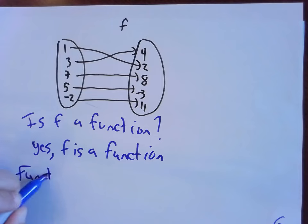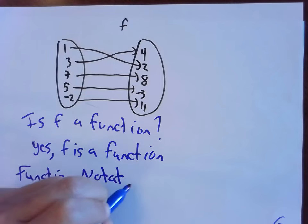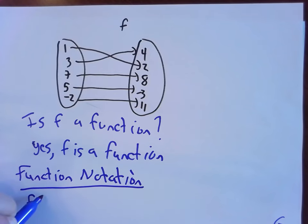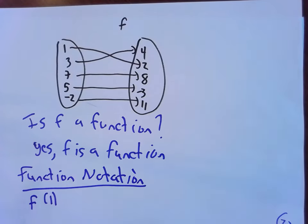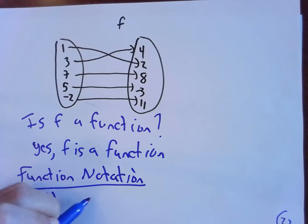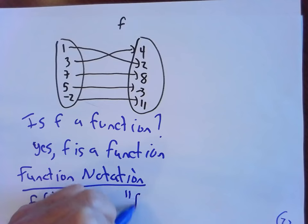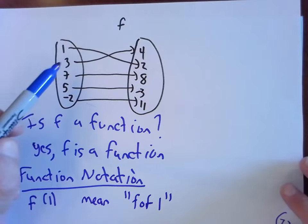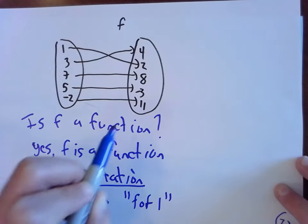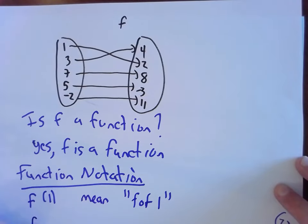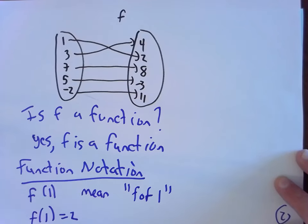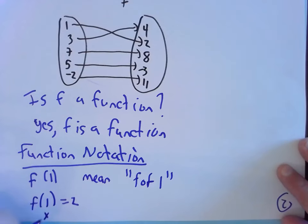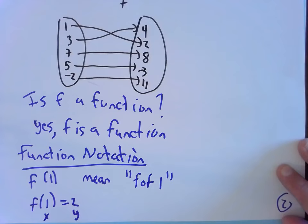So now let's talk function notation. This is when the trouble starts. If I write this group of symbols f(1), typically when we see things sitting next to each other with parentheses, we tend to think multiplication. That's not what this means. This is not f times 1. This is f of 1, and it means: use the function named f to give me the output when the input is 1. So f of 1 is 2. The 1 is my x value, my input; the 2 is my y value, the output.